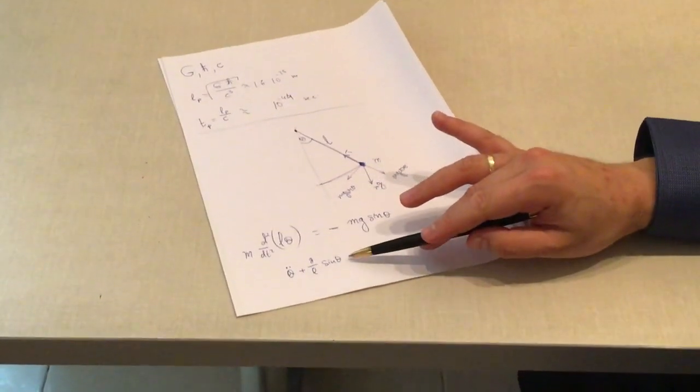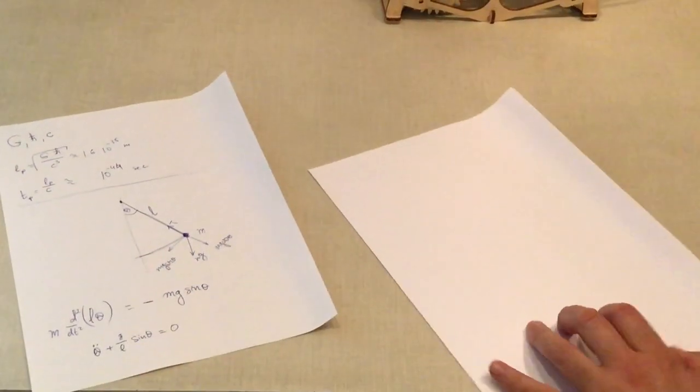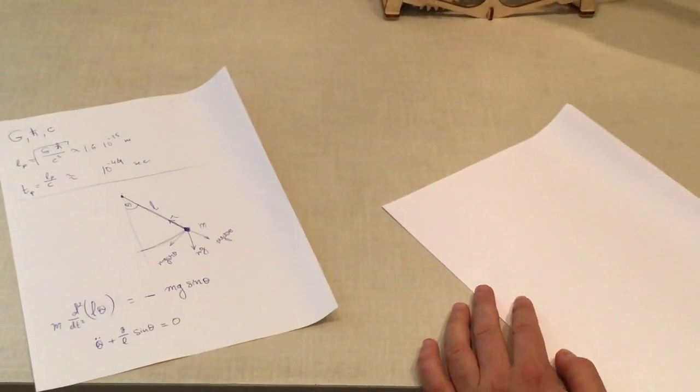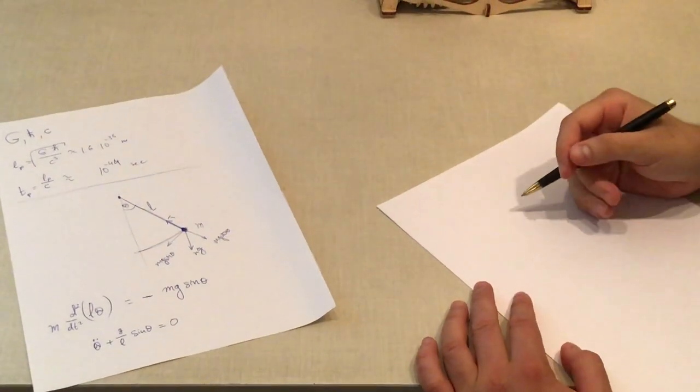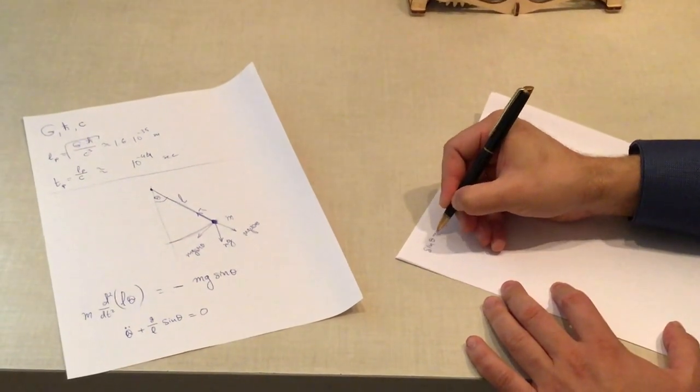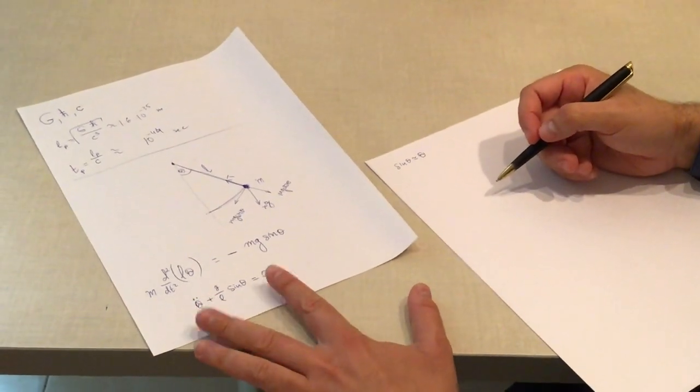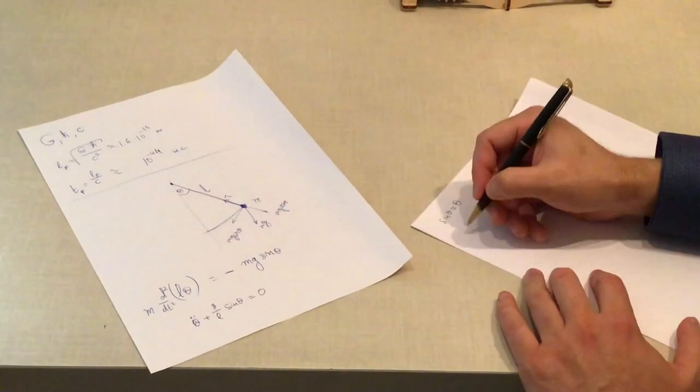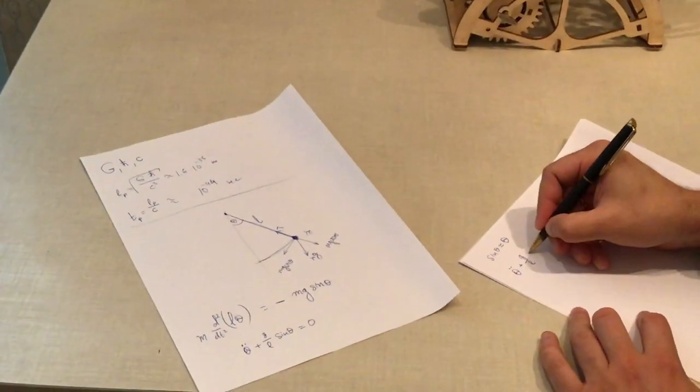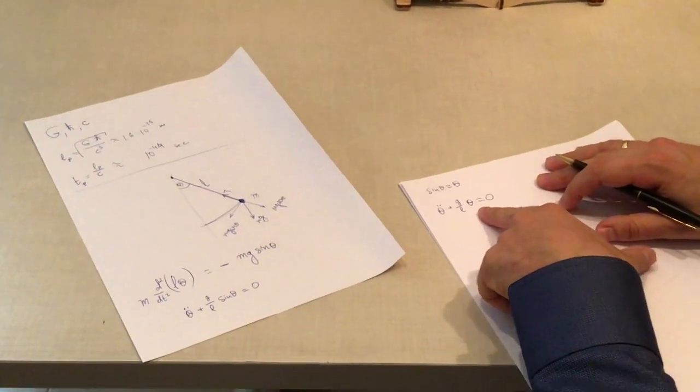This equation can be written as the second derivative of θ with respect to time plus g/l sine of θ equals zero. This equation is highly non-linear, and we can derive an expression for time with elliptic functions. It's more involved and complicated. But let's try to use the harmonic oscillator approximation. As you can see here, this pendulum oscillates with very small angles, roughly one degree. For small angles in radians, there's a pretty good approximation that sine of θ is roughly θ.